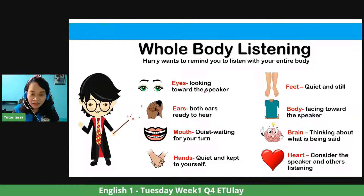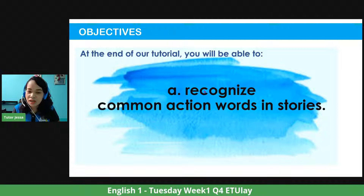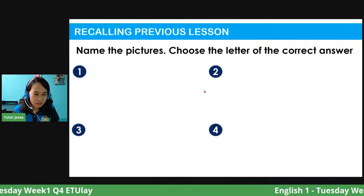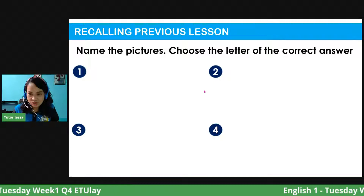At the end of our tutorial, you will be able to recognize common action words in stories. That is our only objective today. But before that, let us recall our previous lesson. You are going to name the pictures and choose the letter of the correct answer. Don't forget to write the number first and then your answer.